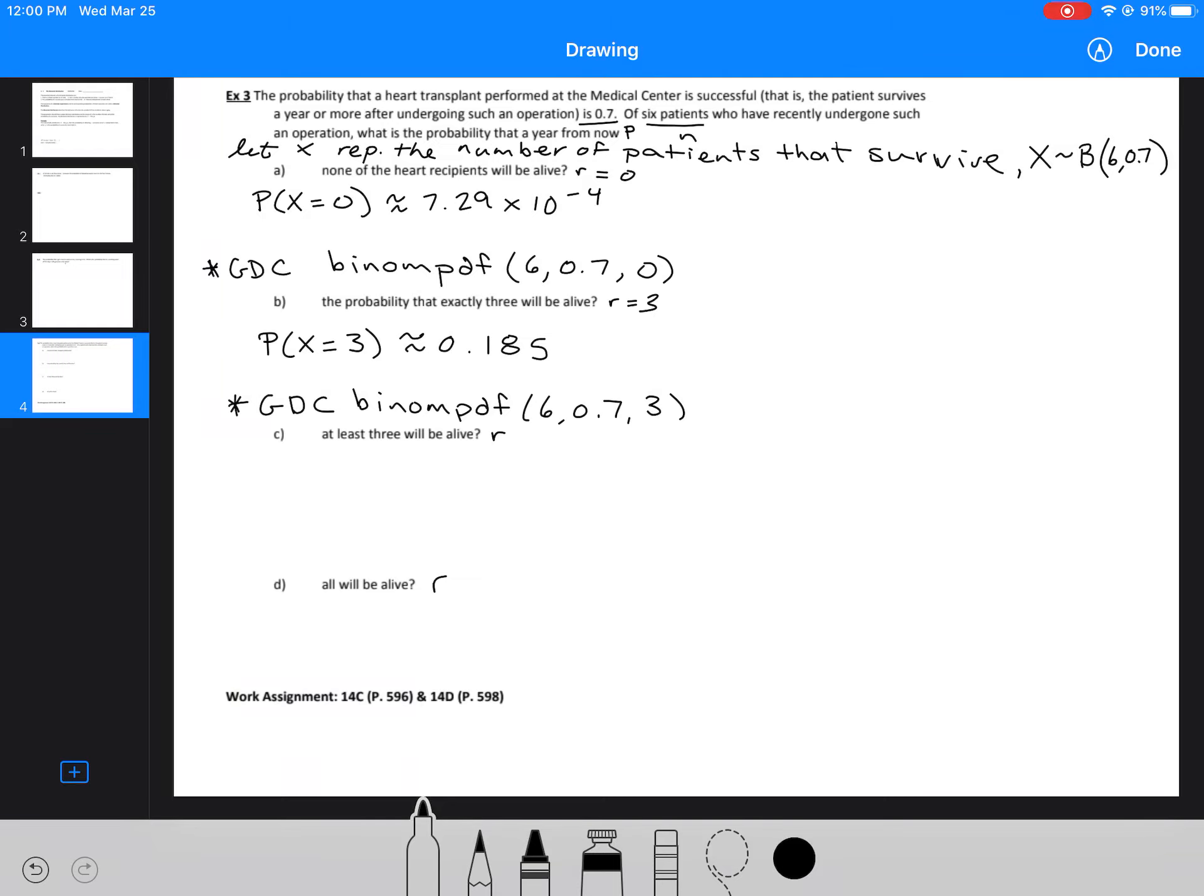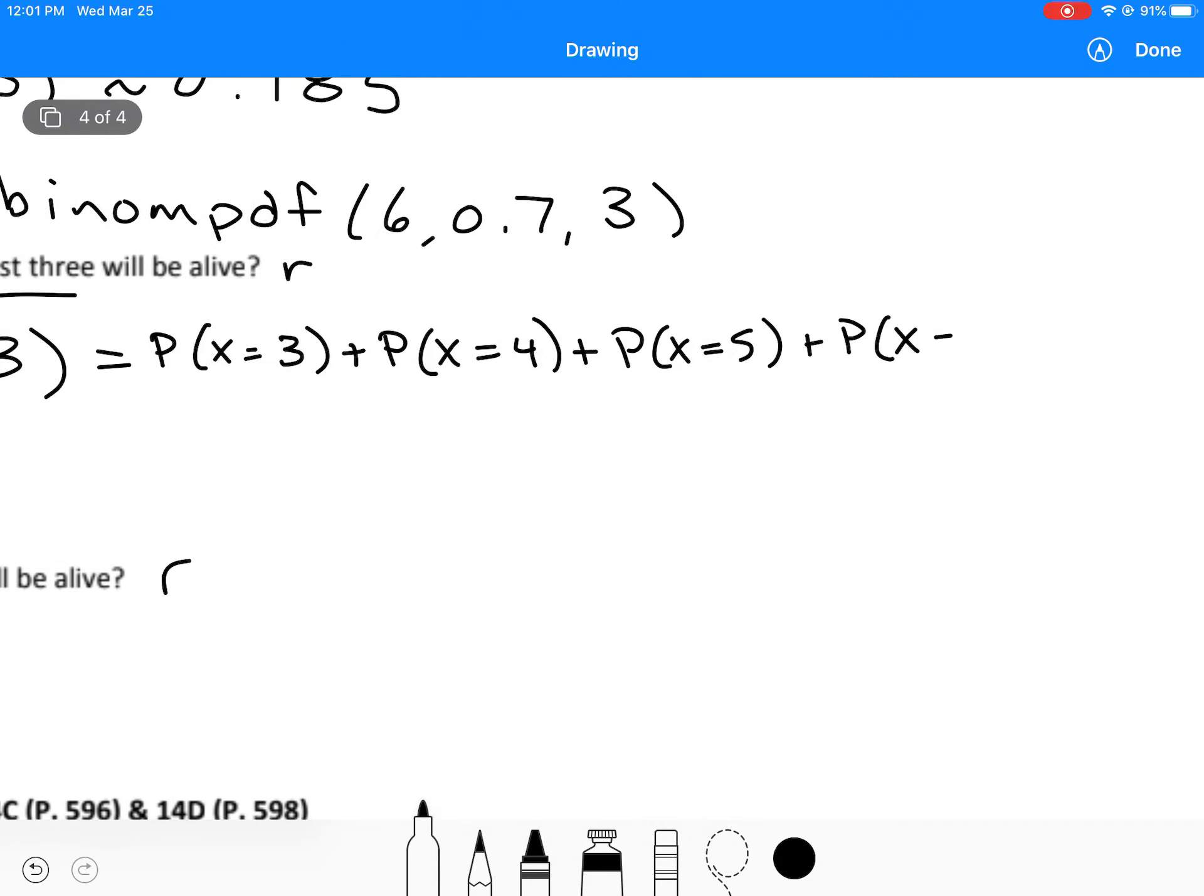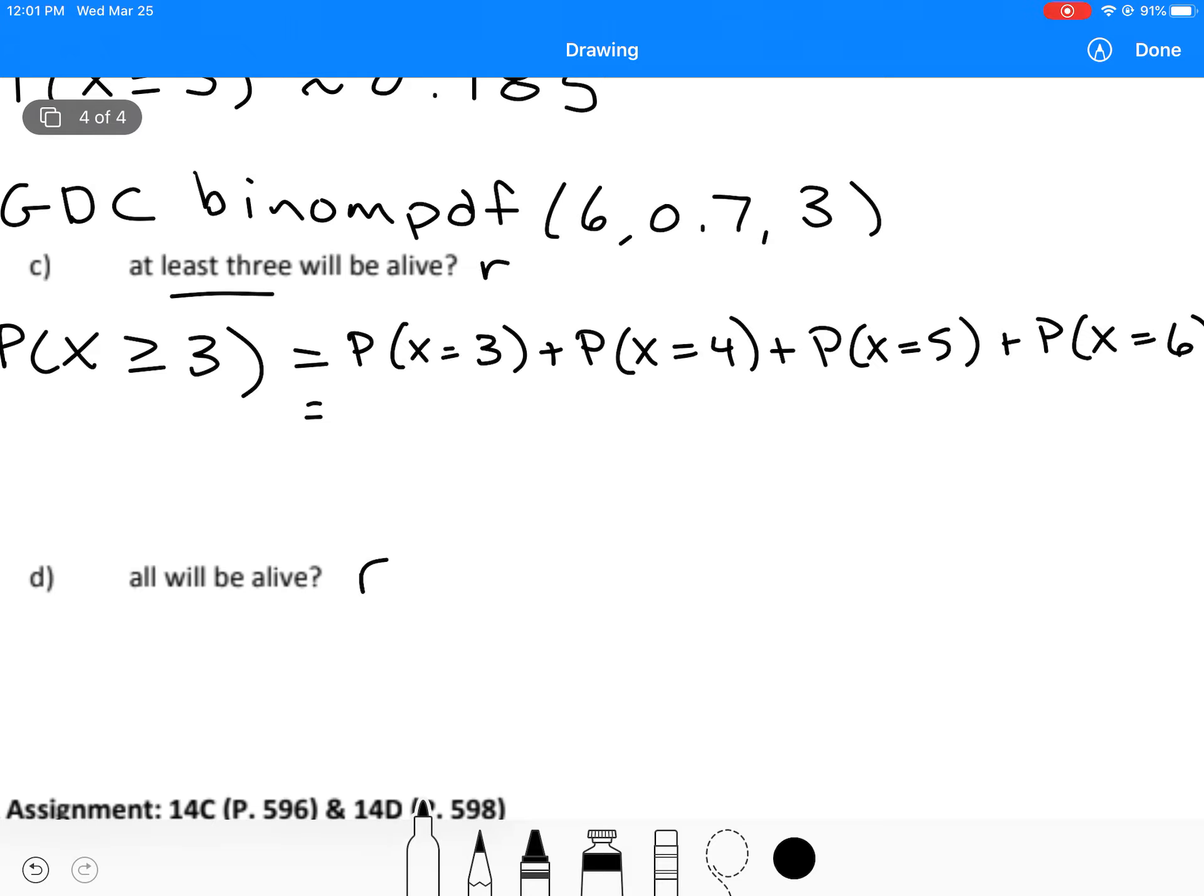Next one we're going to look at, the language has changed. Now we're looking at the probability that at least 3 will be alive. So we want the probability that X is going to be greater than or equal to 3. Now this one, we could add all those up. This would be the probability that X equals 3, plus the probability that X equals 4, plus the probability that X equals 5, plus the probability of X equals 6. Definitely doable. You would use binomial PDF four times, changing the last entry each time. Or I can look at this calculation using binomial CDF.